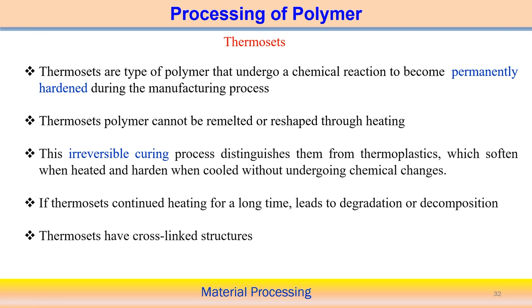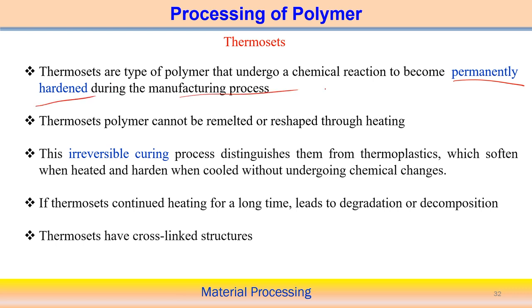Thermosets are also polymers but they undergo a chemical reaction such that they become permanently hardened during the manufacturing process. Therefore, thermosets cannot be remelted, recycled, or reshaped through the application of heat, because heating causes significant chemical reactions and creates a cross-link structure. This is called an irreversible curing process, which distinguishes thermosets from thermoplastics.